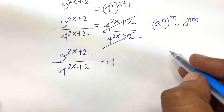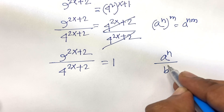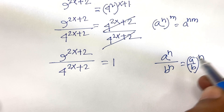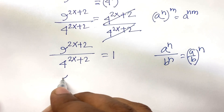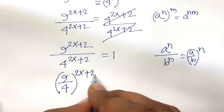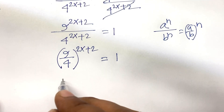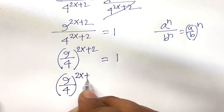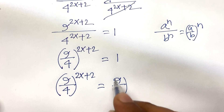Now we know that a to the power n divided by b to the power n equals a over b, all to the power n. The power is common, so I can say 9 over 4, in brackets, to the power of 2x plus 2, equals 1.